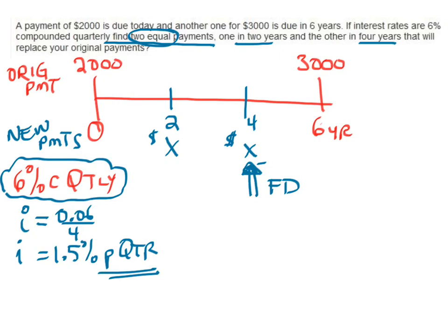I have two payments of X dollars. I need to find the equivalent value of the $2,000 at year 4, plus the equivalent value of the $3,000 discounted from six years to four years. I'm going to multiply by (1 + i) to the positive N on the $2,000, and for the $3,000, I'll multiply by (1 + i) to the negative N.